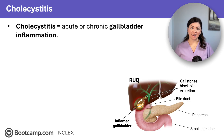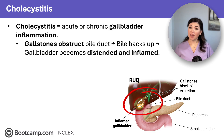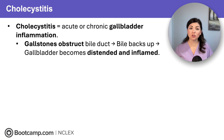Let's start with cholecystitis, which is acute or chronic inflammation of the gallbladder. This typically occurs when gallstones block the bile duct. Bile, which is stored in the gallbladder, backs up and that gallbladder becomes distended and inflamed. Bile helps digest and break down fats, so when bile can't flow, fats are not digested properly.